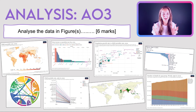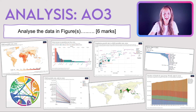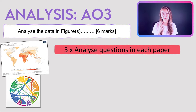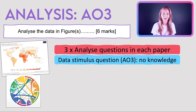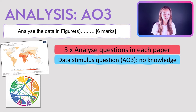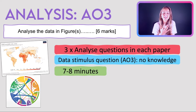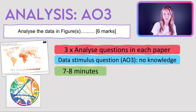So what exactly is the six-mark analyze question? This question comes up three times in each paper — your human paper and your physical paper. It's six marks and it's a data stimulus question, which means you get given some geographical data and you have to interpret it. It is just AO3, meaning it's skill-based — you do not need any knowledge or case studies. You get seven to eight minutes to answer: about one to two minutes interpreting the data and about six minutes to write up your findings.